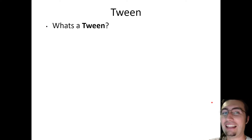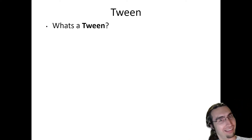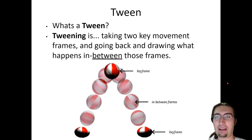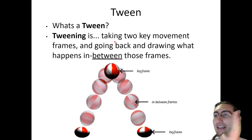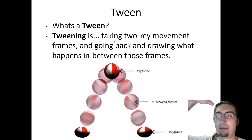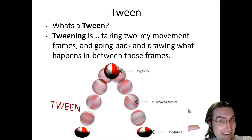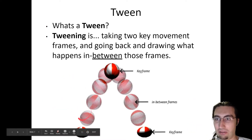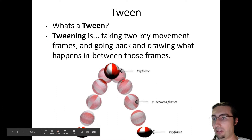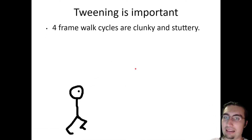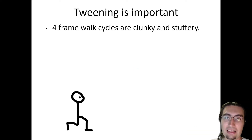Here's a new term: tween. What's a tween? In animation, tweening is taking two key movement frames — two key positions — and making the frames in between those two key positions. Tween stands for 'in between.' So you have key frames here and here, and the tween frames are where the position is drawn between those key frames.